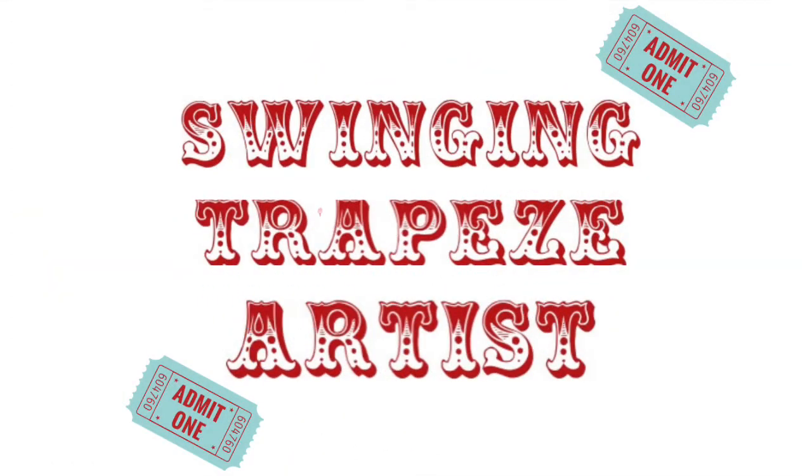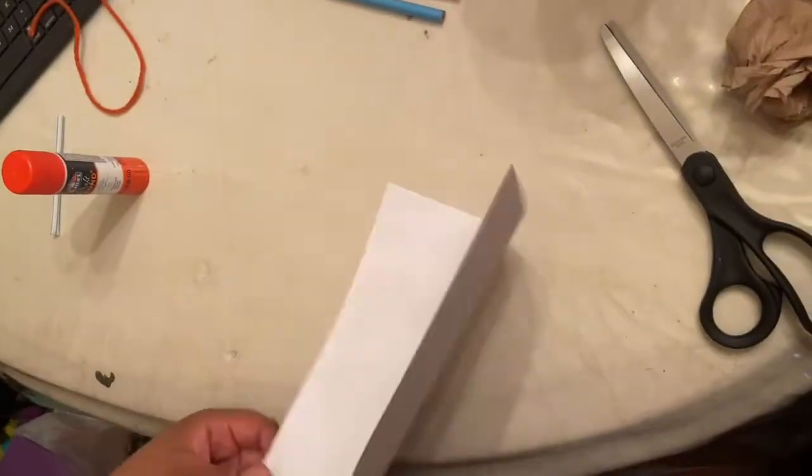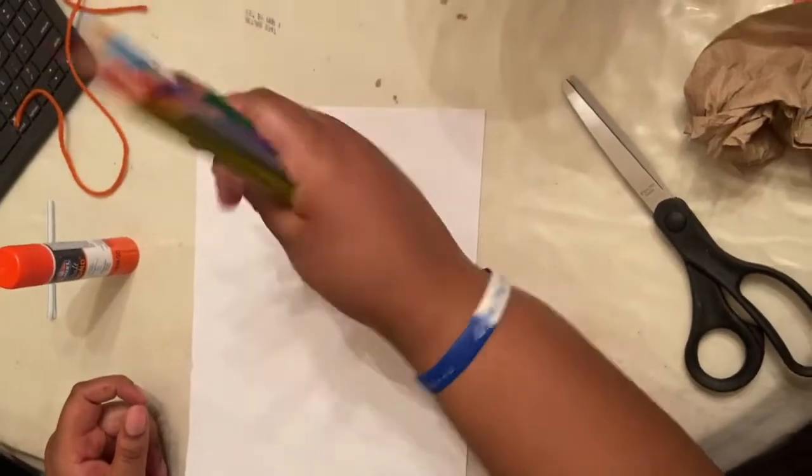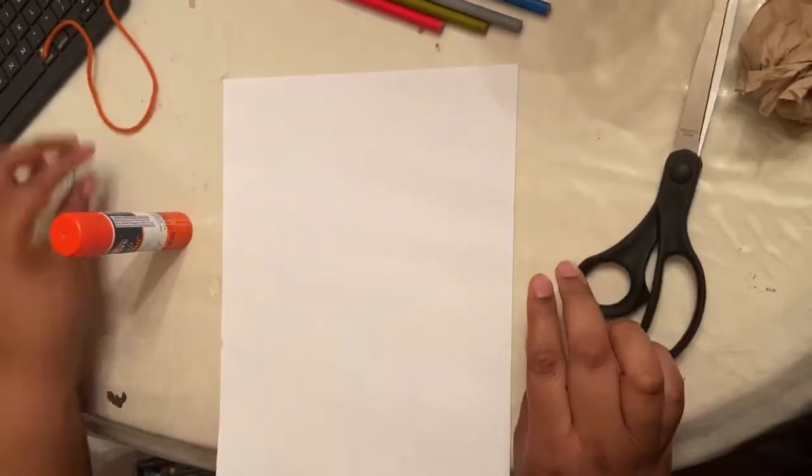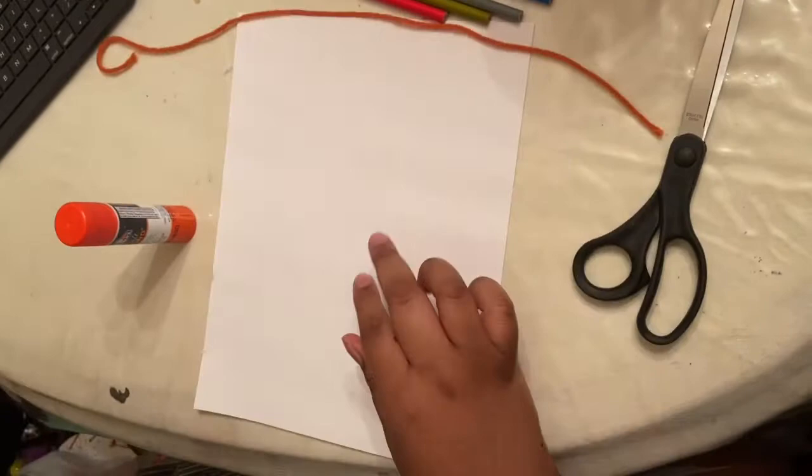Next, let's make a swinging trapeze artist. You'll need some paper, something to color with, glue, scissors, some string, and a straw.